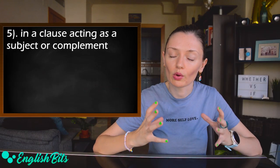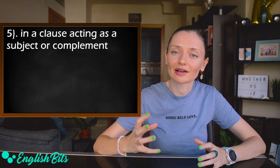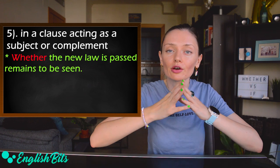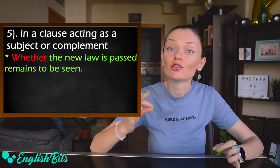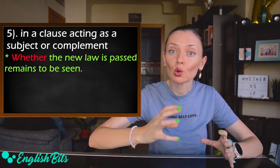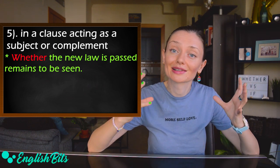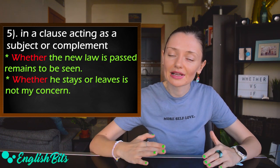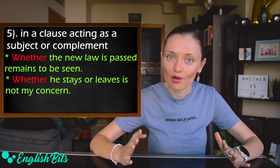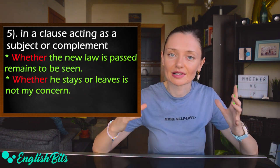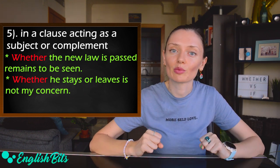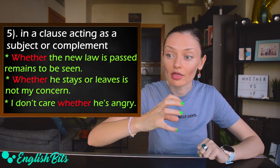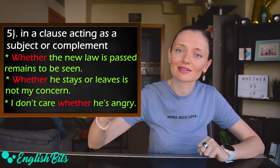Number five: we use 'whether' in a clause acting as a subject or a complement. First example: 'Whether the new law is passed remains to be seen' — 'whether the new law is passed' acts as the subject. Second example: 'Whether he stays or leaves is not my concern' — again, the subject. And one more: 'I don't care whether he's angry' — in this case, 'whether he's angry' acts as a complement.